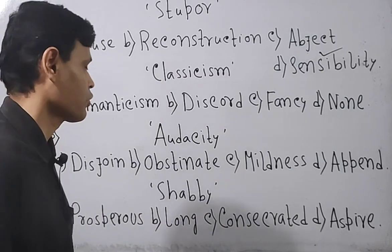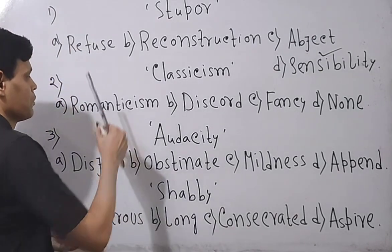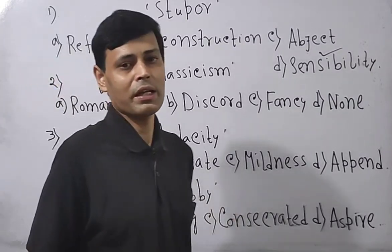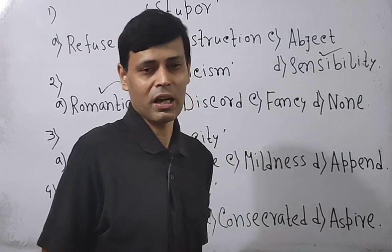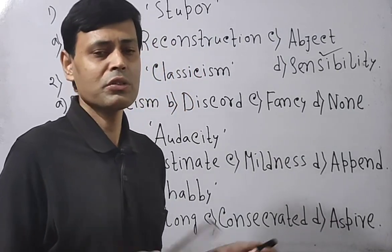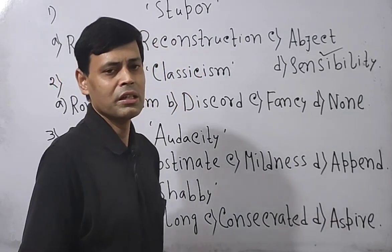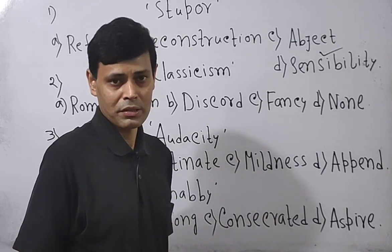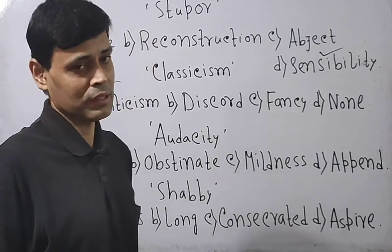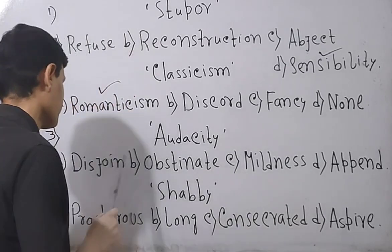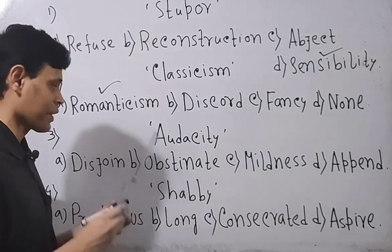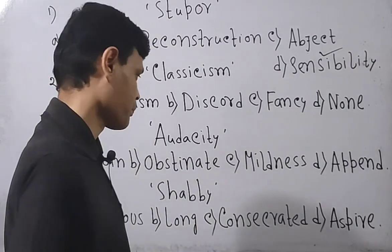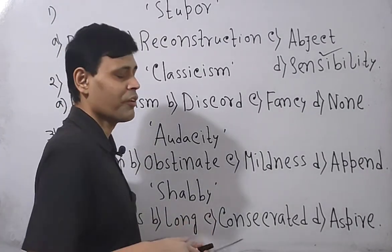Next word: 'audacity.' Audacity means you have courage, or rather it is about excessive pride — arrogance or haughtiness. The options include: disjoint, which means separate or segregate; abstinent, which means insistent or stubborn; and mildness, which means very humble.